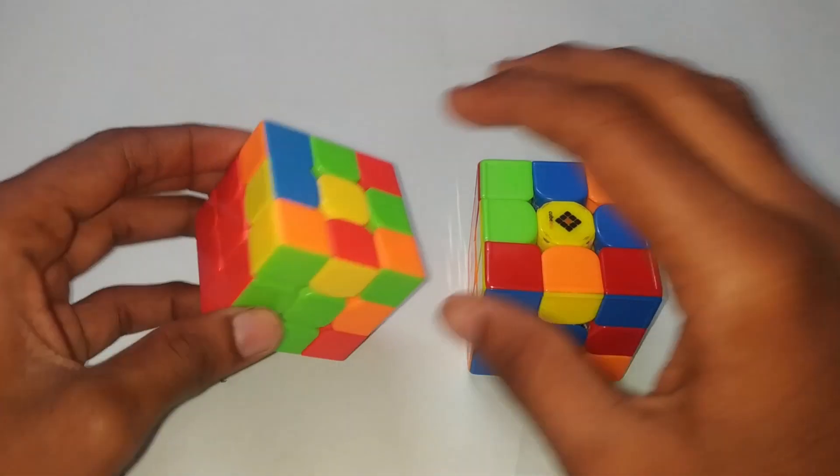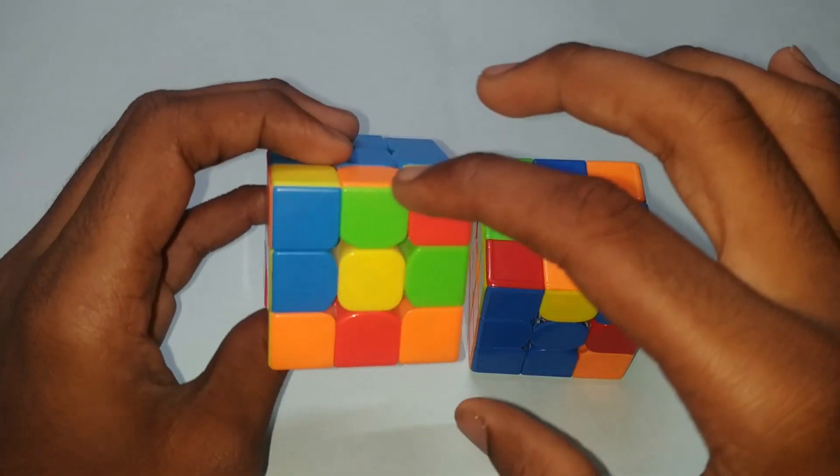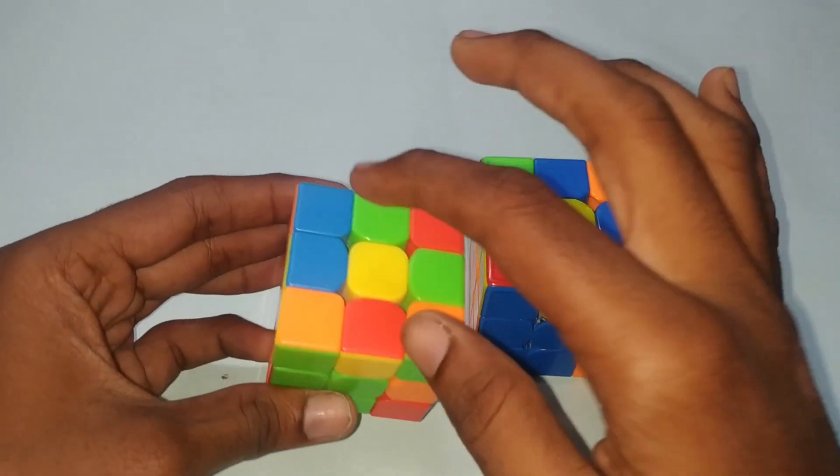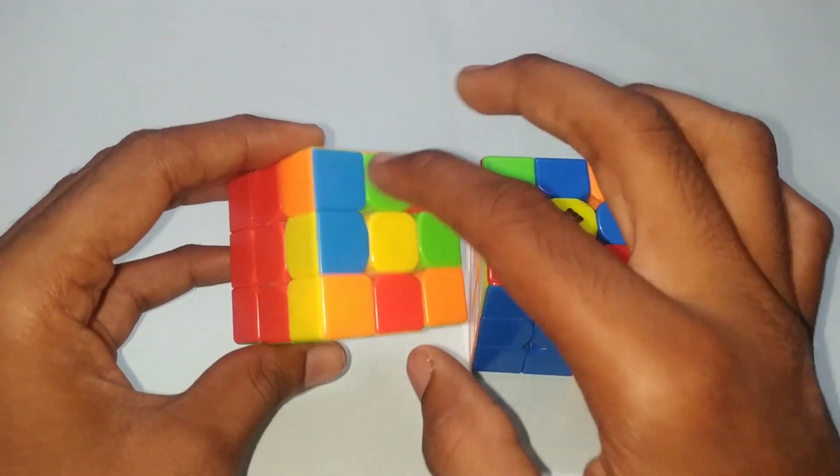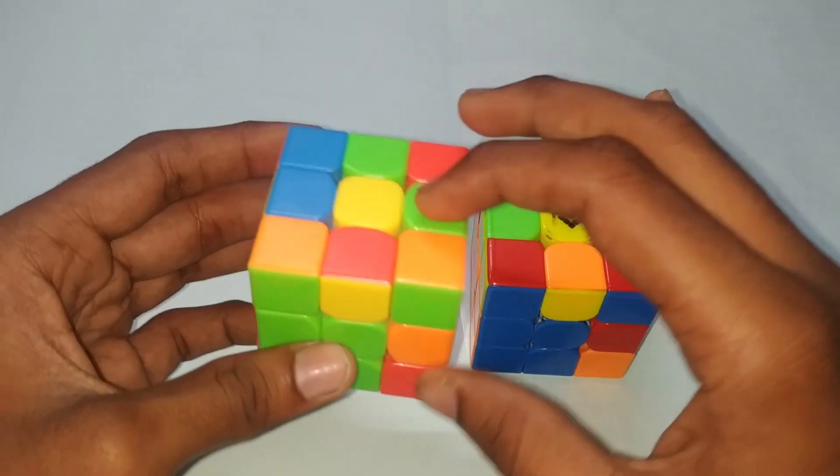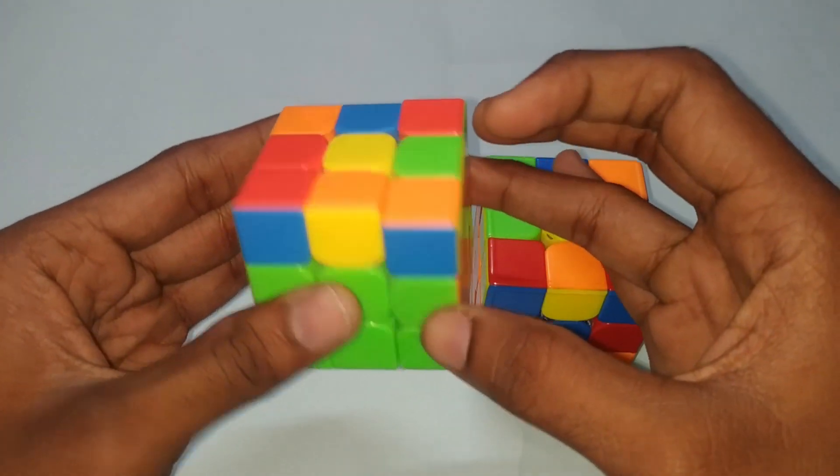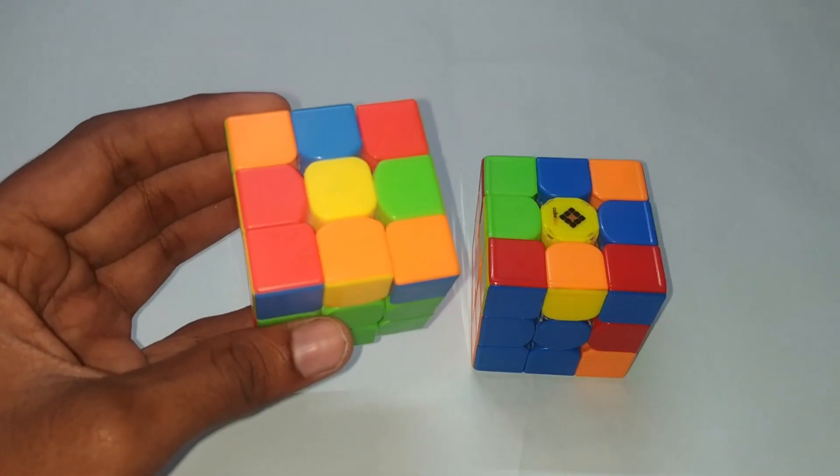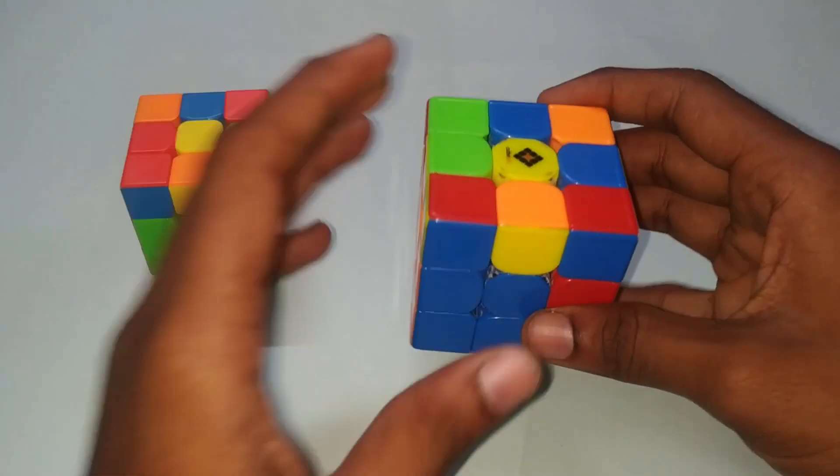In these two cubes, if you have F2L pair insert, we will use basic insert. If you use fundamentals or R U R prime, you will use R U R prime. But OLL is not oriented, so now we will use an algorithm.